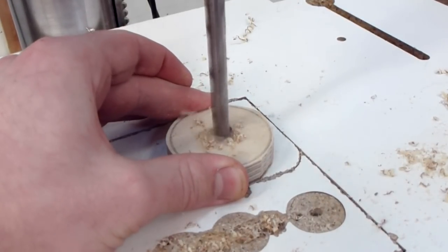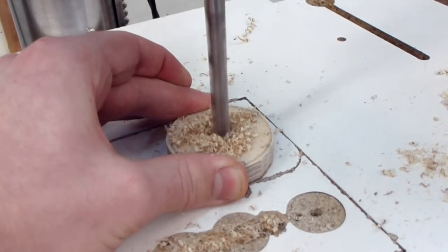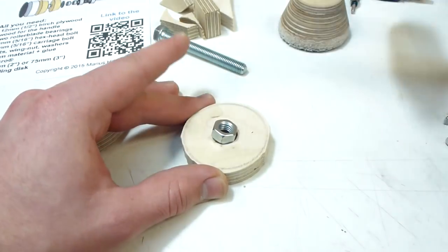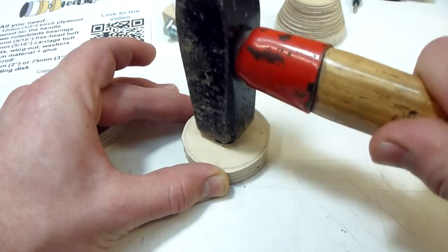Drill all the way through the smaller circle with a smaller bit. Hammer in the nut and glue the two pieces together.